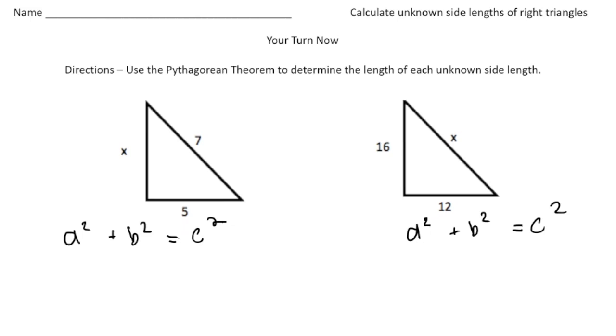Welcome back. Let's see how you did with these practice problems. So the first right triangle we're trying to solve for let's say the a side. So it's going to be a squared plus b squared equals c squared.